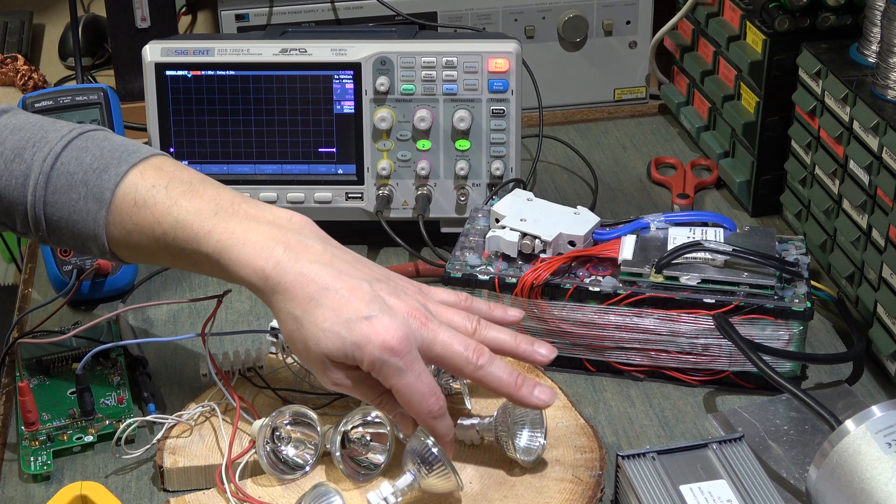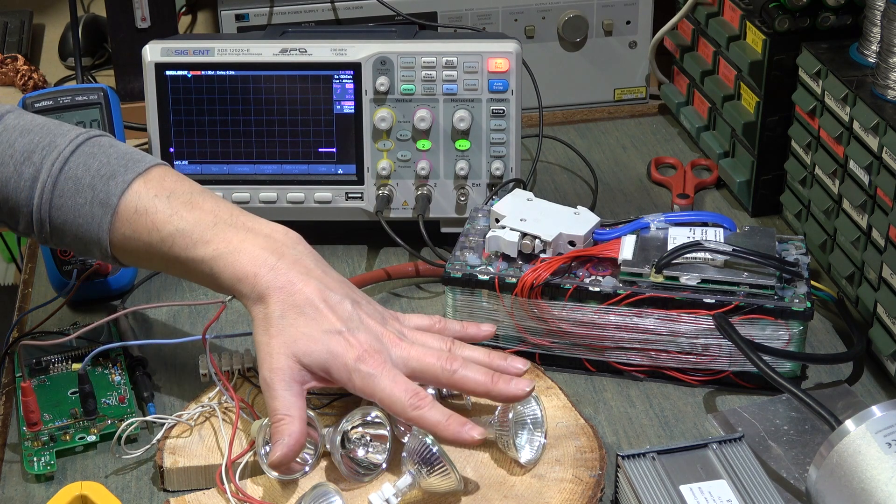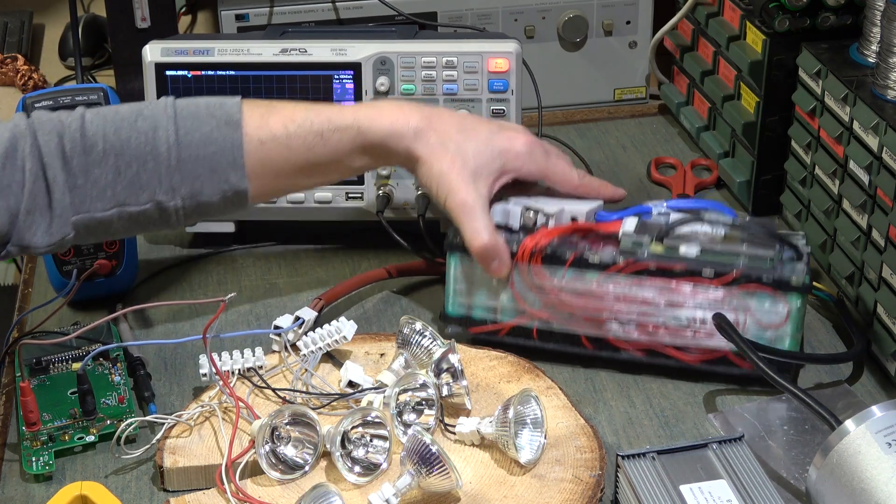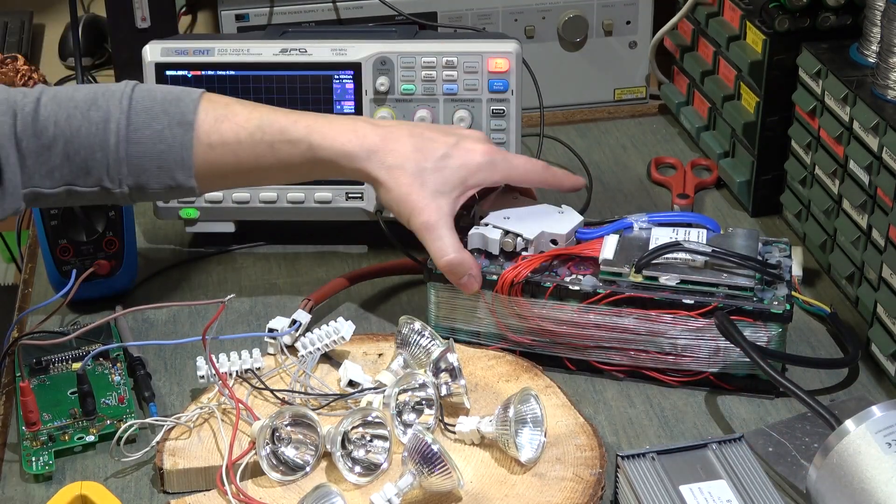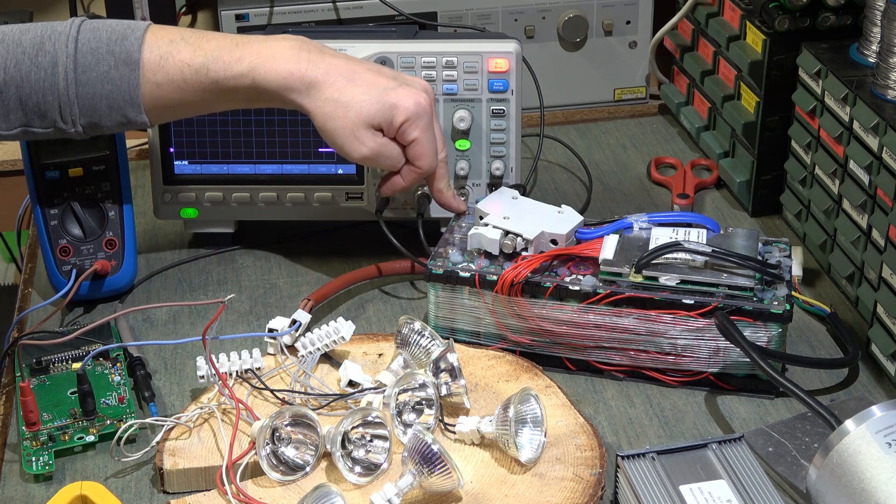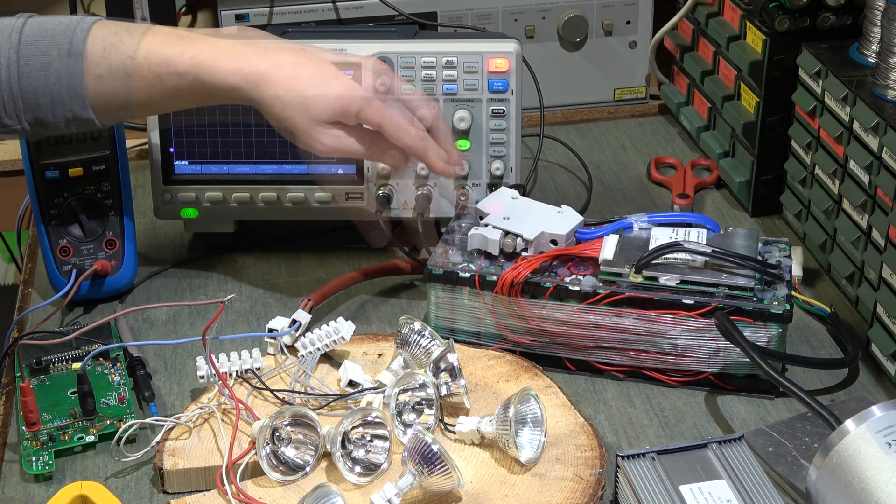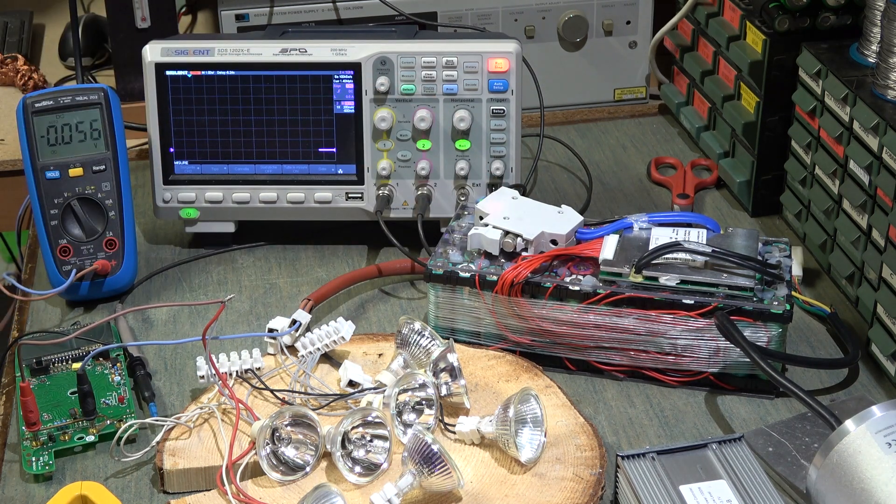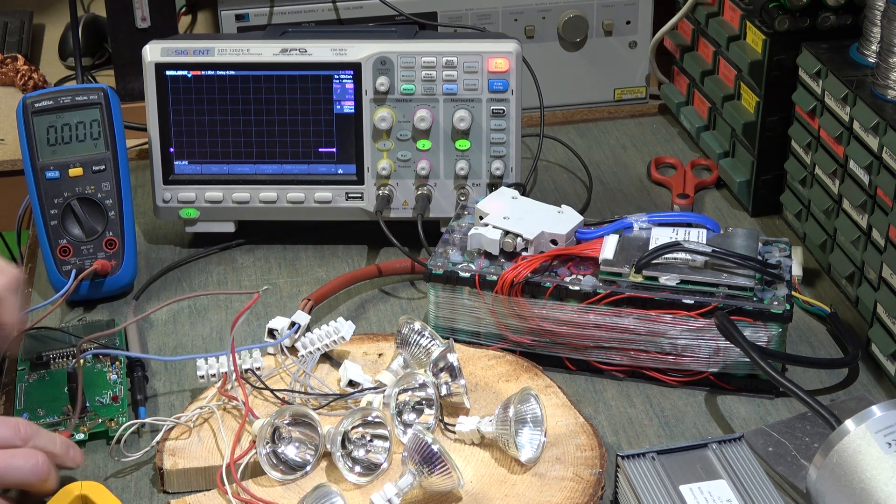La resistenza della lampadina in condizioni normali è bassissima, poi appena si accende e si scalda la resistenza aumenta di colpo e avrà il suo assorbimento normale. Allora questa batteria è composta, lo ripeto per chi non lo sa, da 13 file di celle per cinque.